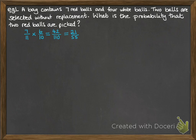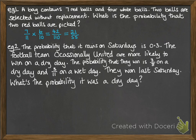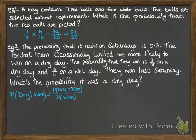That example is quite straightforward — you don't need to use the formula so much, it's just logical thinking. For the next example we will need to use our formula. The probability that it rains on Saturdays is 0.3. There's a football team called Occasionally United — they're more likely to win on a dry day. The probability they win is three eighths on a dry day and three elevenths on a wet day. They won last Saturday. What's the probability it was a dry day? We're looking at the probability it was dry given that they won — using our formula, that's the probability it was dry and they won divided by the probability they won.